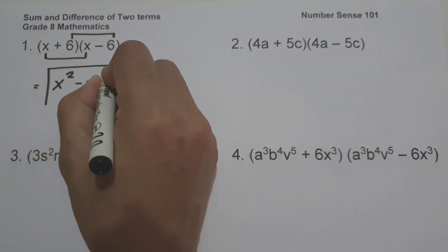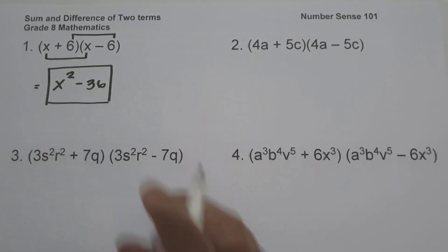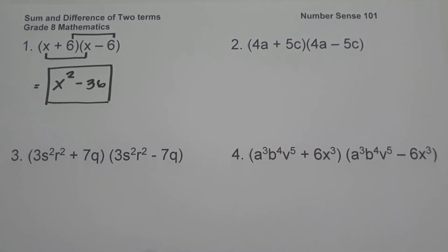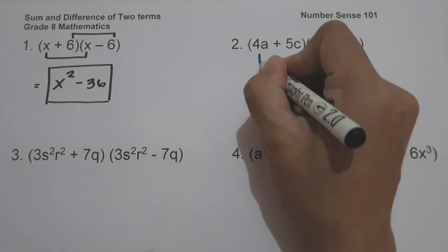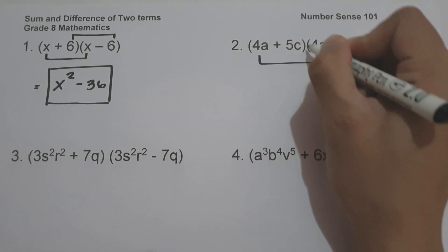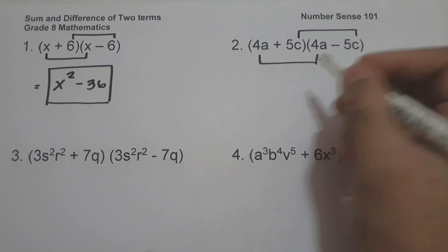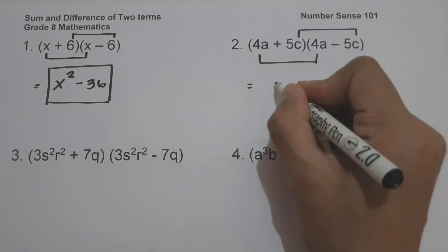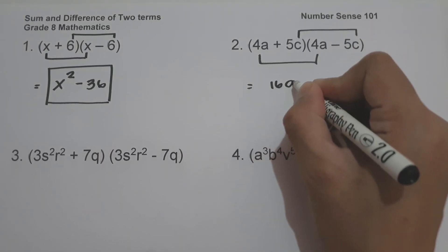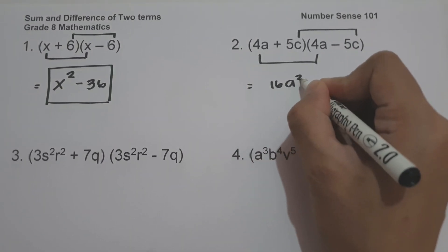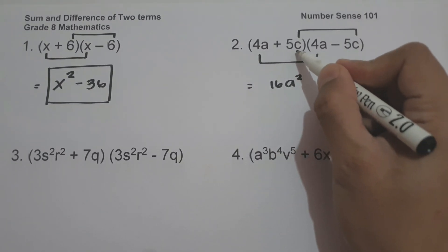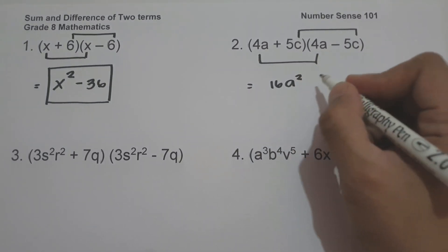On example number two we have quantity four a plus five c times the quantity four a minus five c. Multiply first term to first term and last term to last term: four a times four a is sixteen a squared, and five c multiplied by negative five c is negative twenty-five c squared. So the answer is sixteen a squared minus twenty-five c squared.